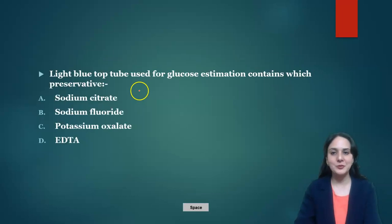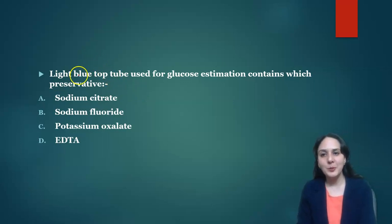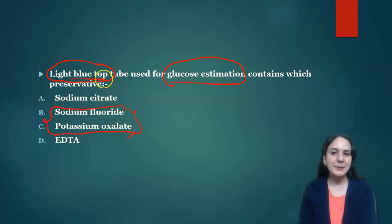The first question was: light blue top tube used for glucose estimation contains which preservative? Now for glucose estimation we use sodium fluoride and potassium oxalate, but the tube for this is grey top tube, not light blue top tube. Light blue is for citrate. So why citrate?